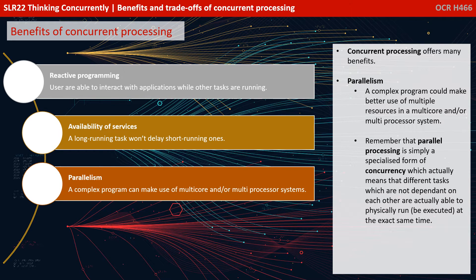Parallelism. A complex program could make better use of multiple resources in a multicore and/or multiprocessor system. Remember from the previous video that parallel processing is simply a specialised form of concurrency, which actually means that different tasks which are not dependent on each other are actually able to be physically run or executed at the exact same time.